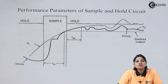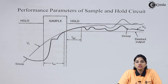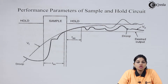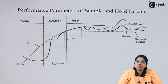We know that in case of sample and hold circuit, the circuit has two modes of operation: sample mode and hold mode. This mode of operation depends on the position of the switch controlled by control voltage Vc. To understand the performance parameters of sample and hold circuit, we need to consider certain parameters, and for that purpose we need to consider the diagram first.